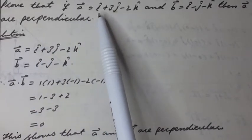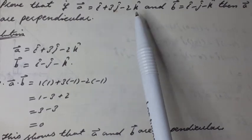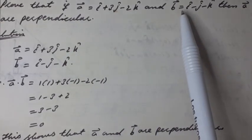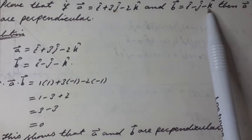Prove that if a vector is equal to i unit vector plus 3j unit vector minus 2k unit vector, and b vector is equal to i unit vector minus j unit vector minus k unit vector, then a vector and b vector are perpendicular.